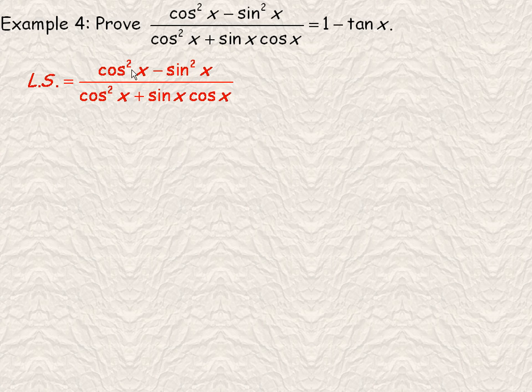This is actually the difference of two perfect squares, and so we can factor that according to the difference of two perfect squares. And there is a common factor of cos x in the denominator.